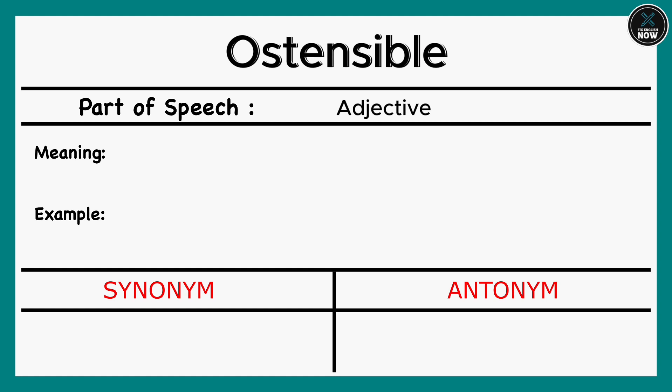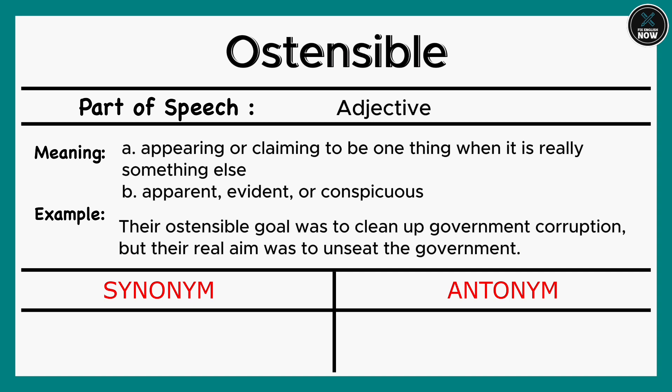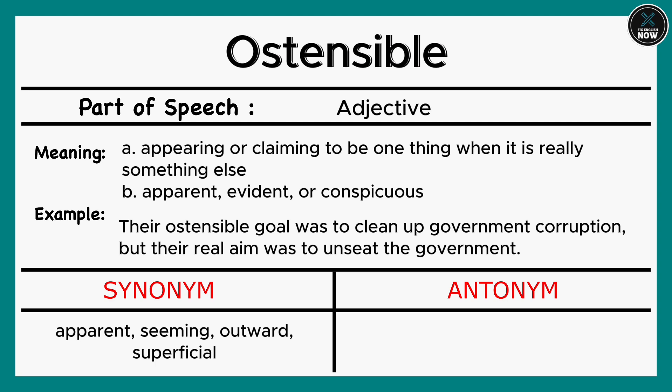Ostensible: A. Appearing or claiming to be one thing when it is really something else. B. Apparent, evident, or conspicuous. Example: Their ostensible goal was to clean up government corruption, but their real aim was to unseat the government. Synonyms: Apparent, Seeming, Outward, Superficial. Antonyms: Genuine, Profound, Real, Obscure.